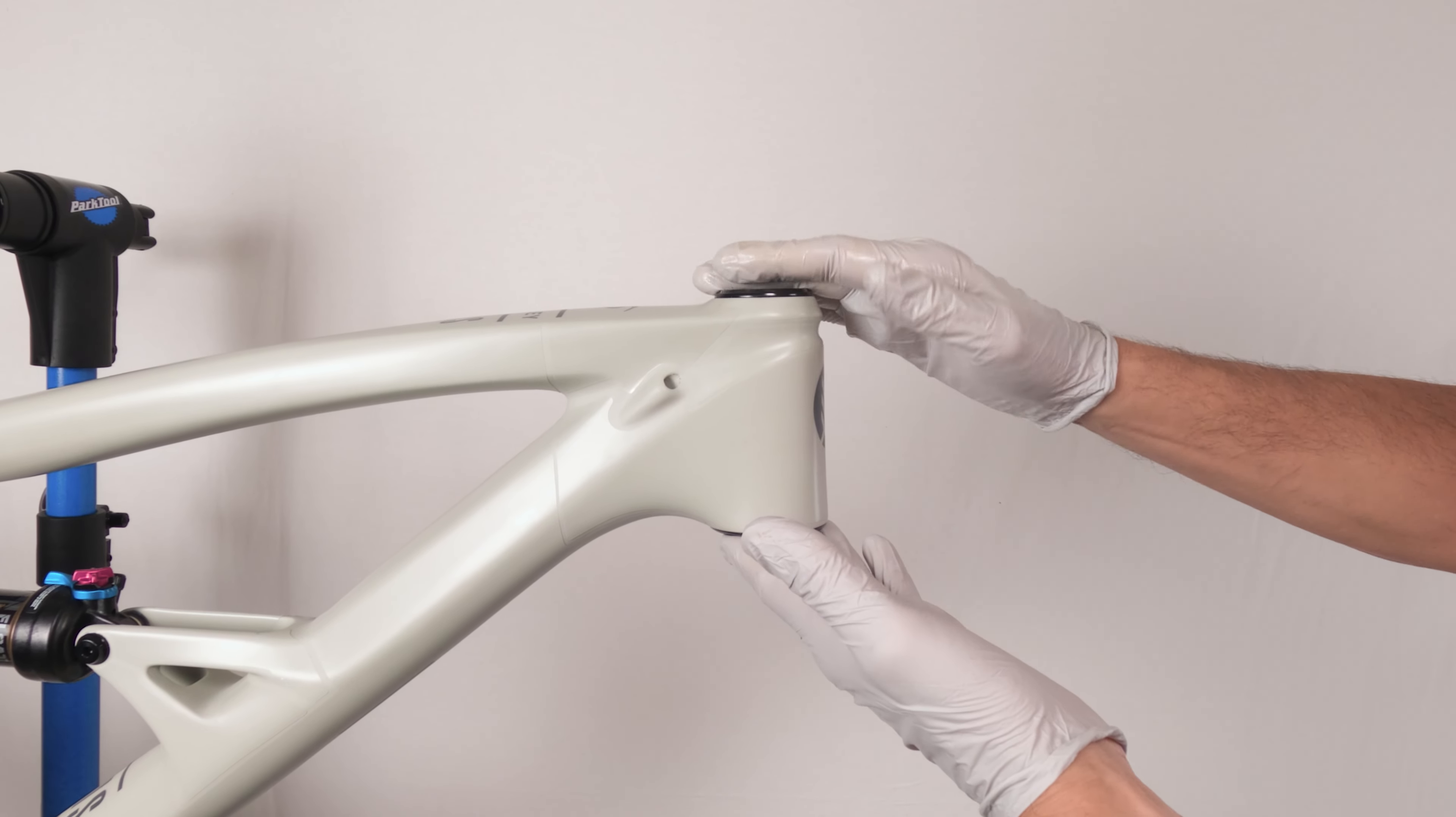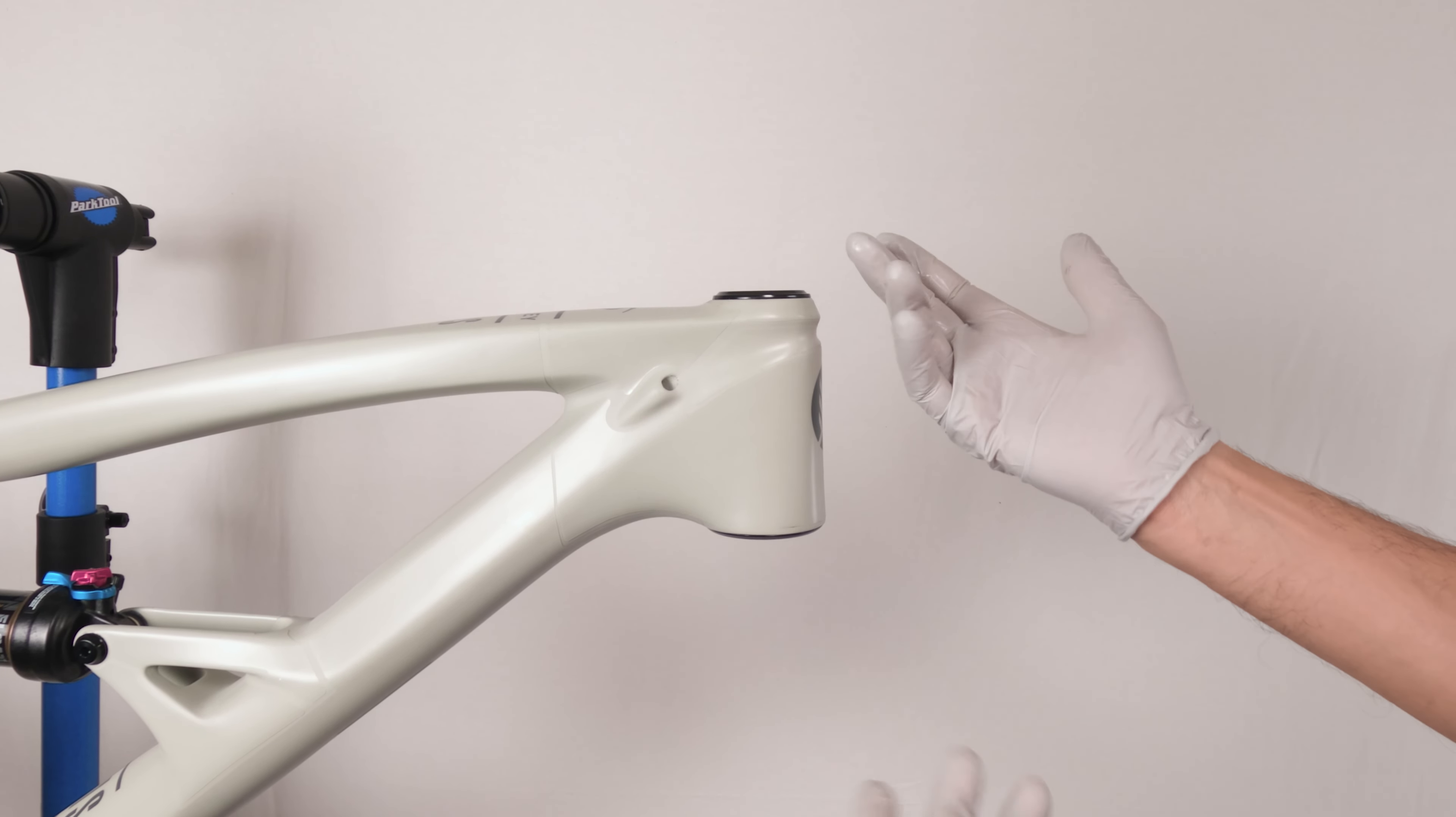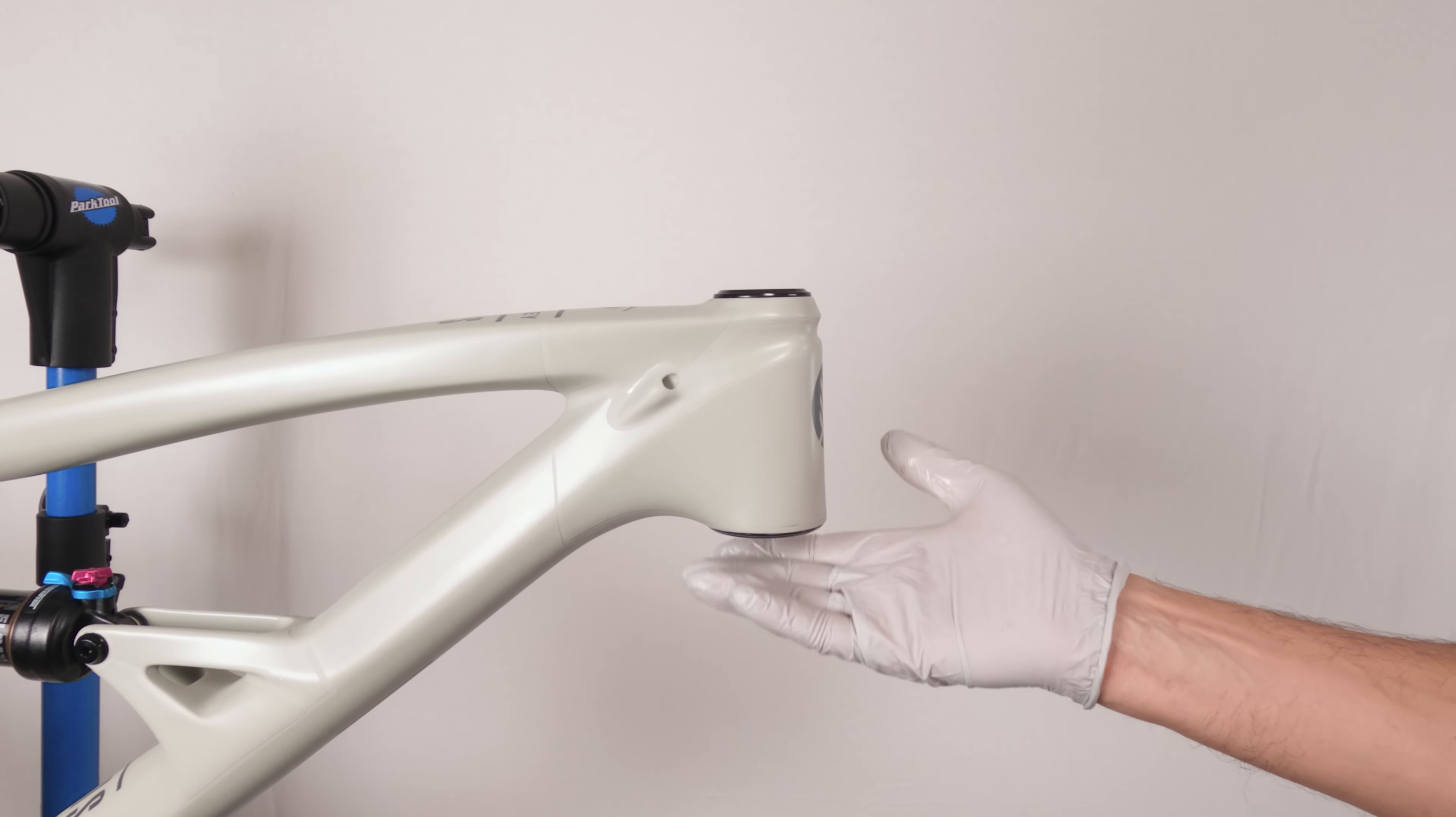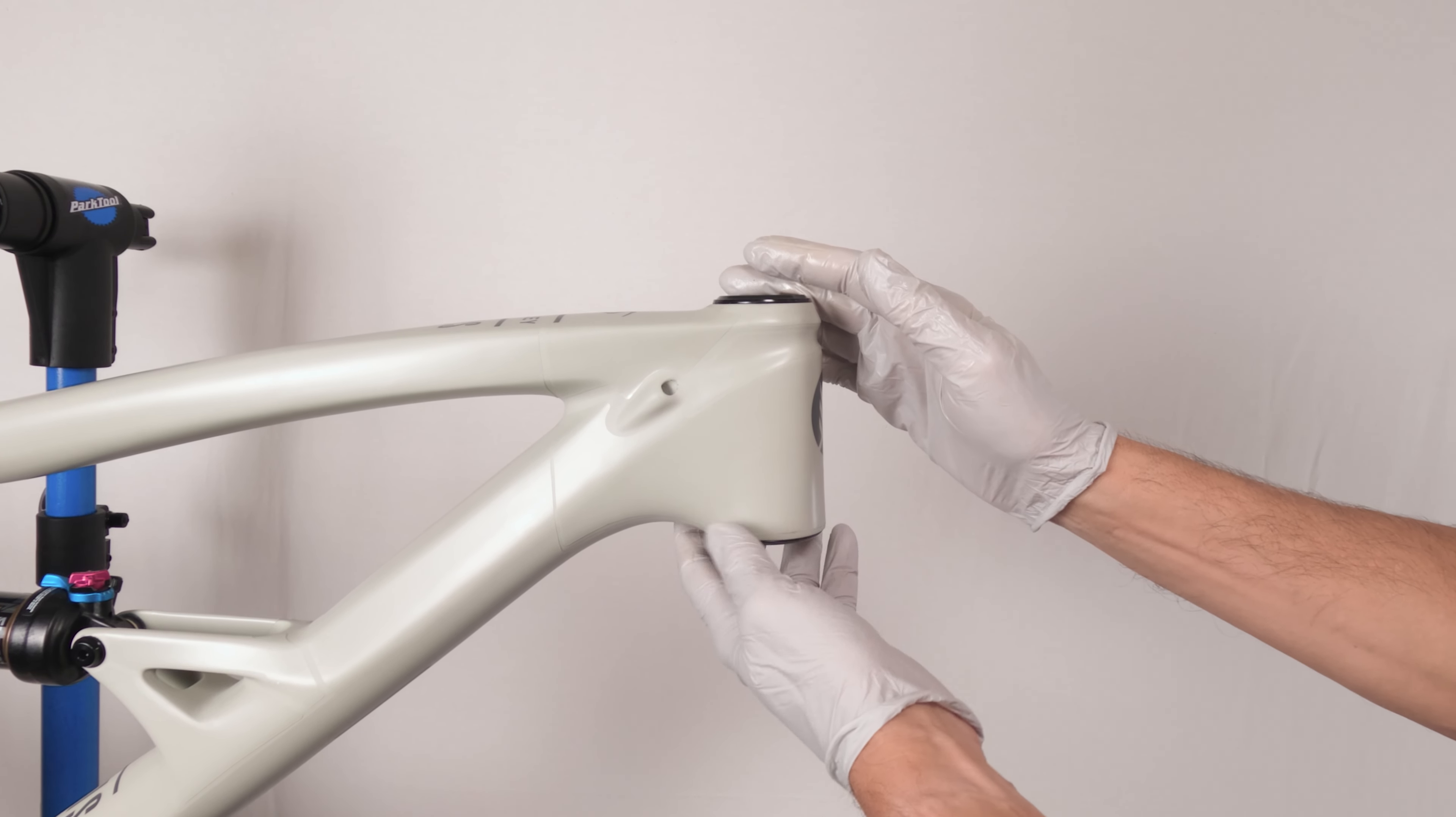We just installed the bottom cup. The top cup would be the exact same process. Again, I'm not going to remove it. It's just pointless. It's the exact same process. In fact, the bottom cup needs a little bit more attention typically than the top cup, unless your top cup has an emblem that you want to align as well. Typically they won't, and you just press them in.